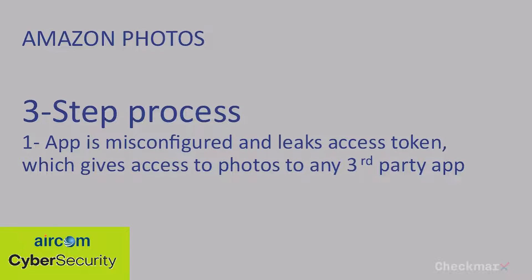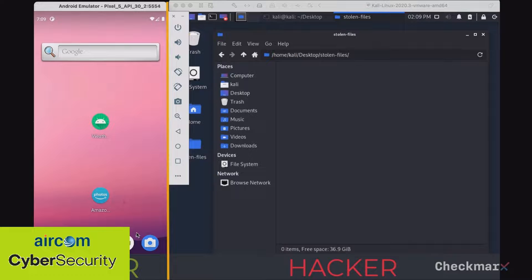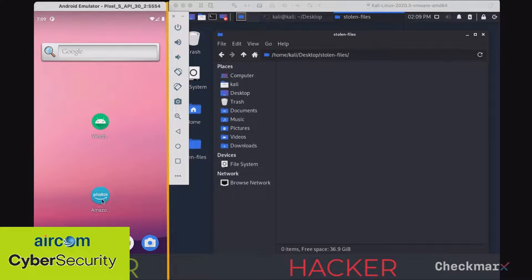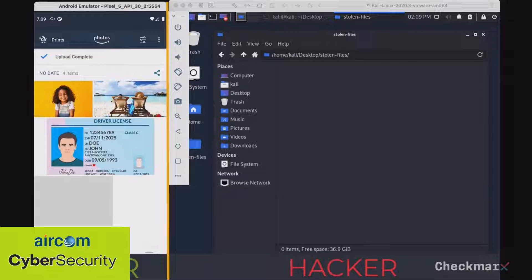First, the Checkmark team found that the access token of the Photos app was not well protected and leaks through one of the APIs. You can think of it as the password being sent to other apps in plain text. In this demo, a malicious weather app steals the photos and sends them to the hackers.